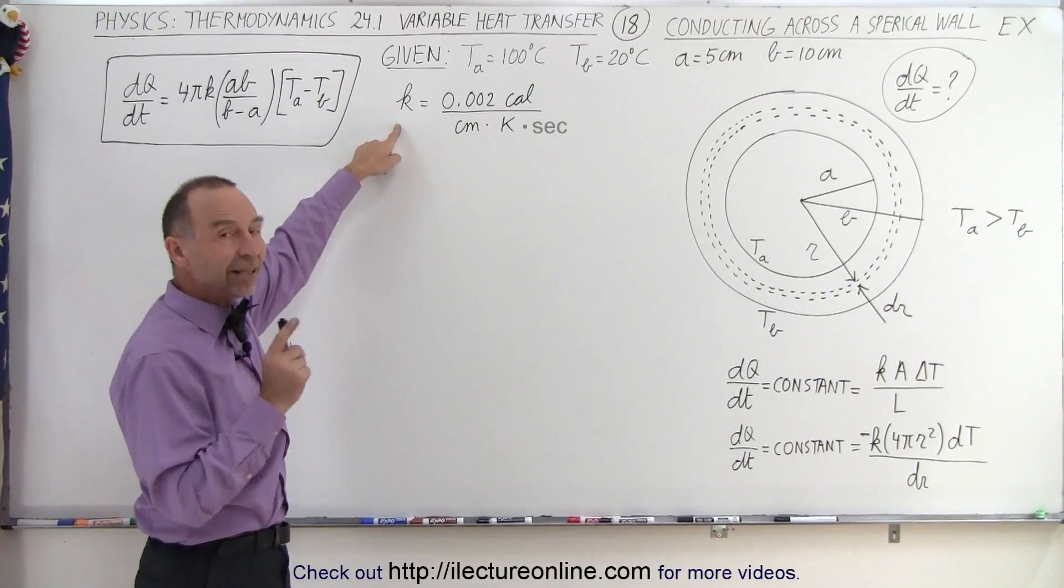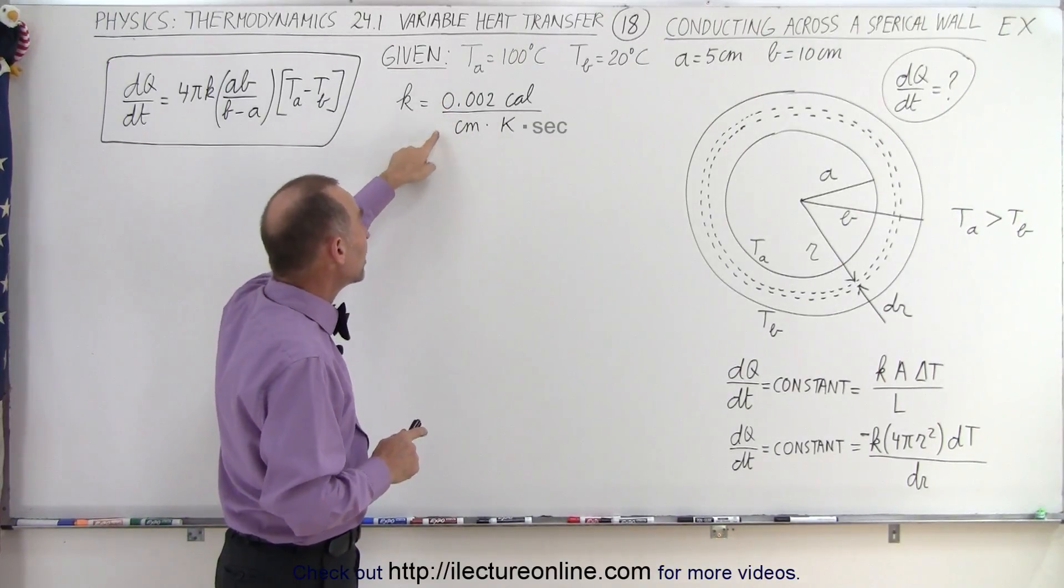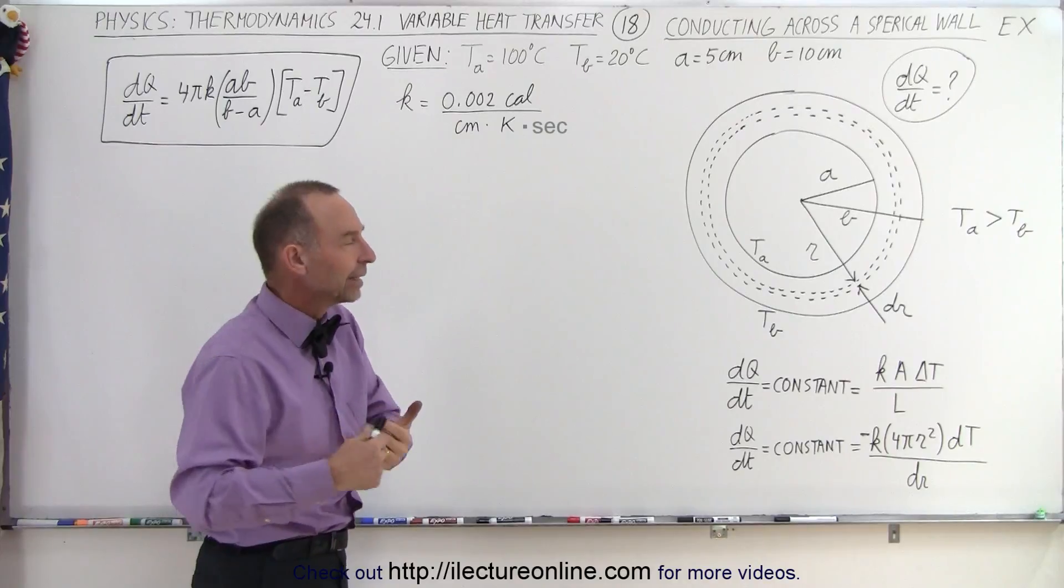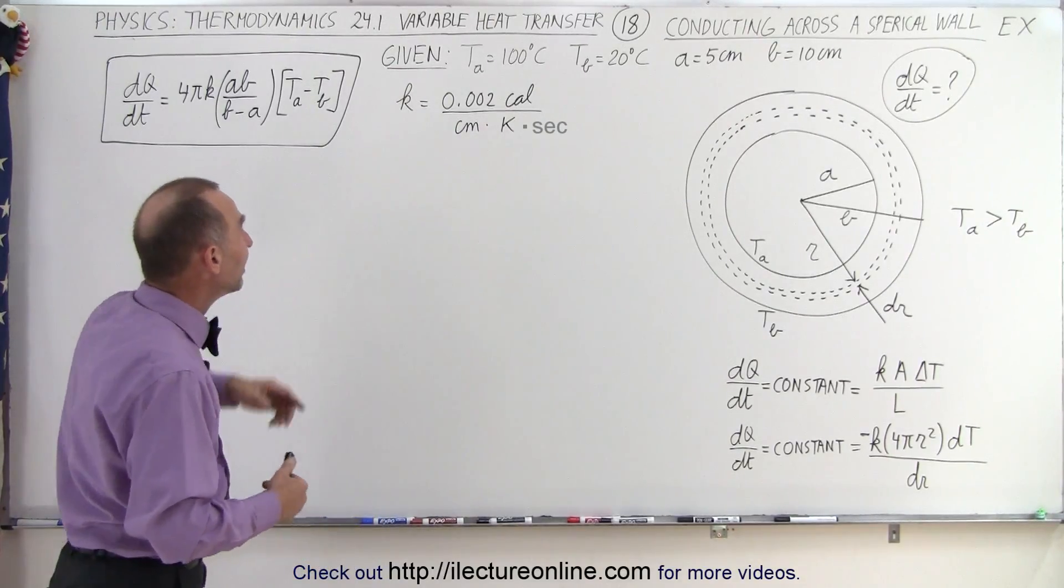We're also given K, but in this case K is given to us in terms of calories per centimeter times Kelvin. Later on we'll convert that into more standard units, but let's see if we can work this problem out using these types of units.